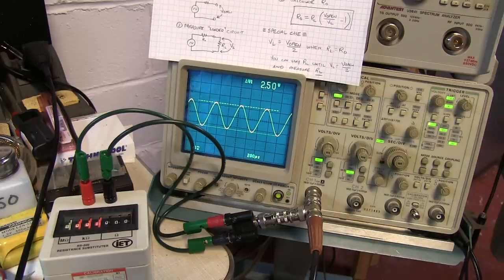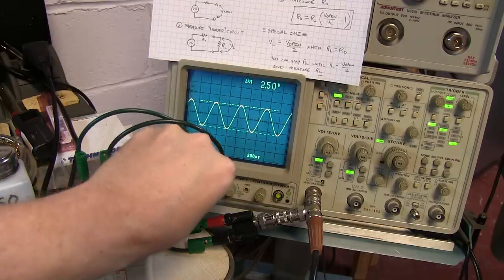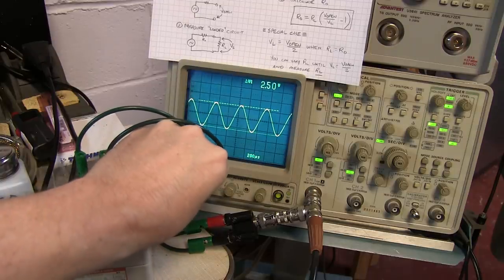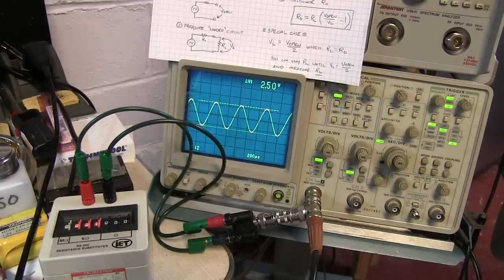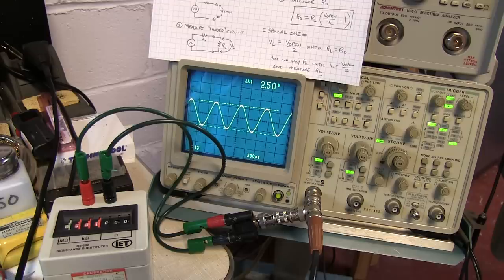Where I've got a thousand ohms on the output and it looks like we're sitting right about two and a half volts. So I know my unloaded voltage was at four volts and now my loaded voltage is at 2.5 so with that we can run the calculation and see what the output impedance is.